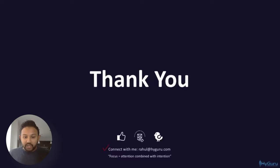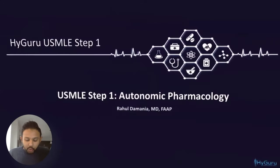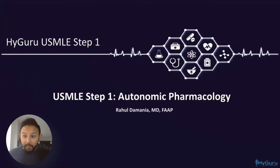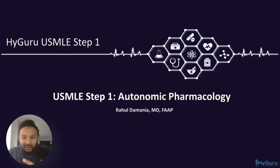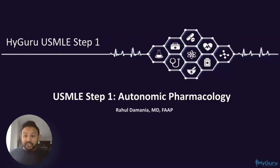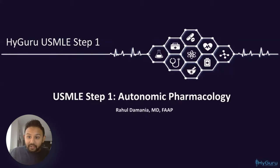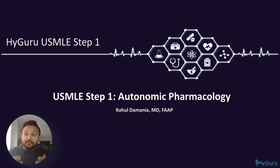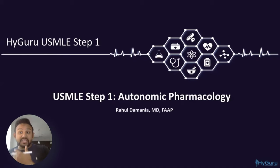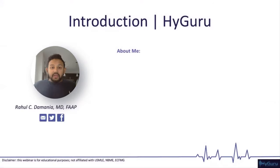Today we're going to be covering autonomic pharmacology. This is a very high yield topic for your Step 1. We're going to go into the cellular and molecular physiology, then also take a big picture look at human physiology and BRS physiology concepts. We'll tie it into pathology, and autonomic pharmacology forms the basis for receptor physiology as well as understanding toxidromes.